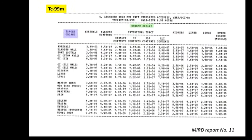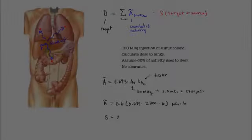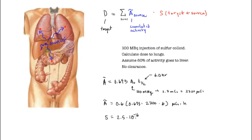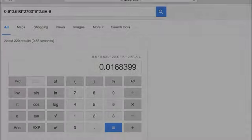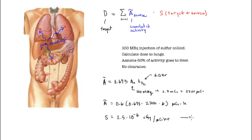Now we look it up - find the liver as the source organ, the lungs as the target organ, and here's your S factor. We write down that factor S from the table, and the units are centigray per microcurie-hour. Let me just type it out and get the answer. That gives us dose equals 0.016, and the units are centigray.